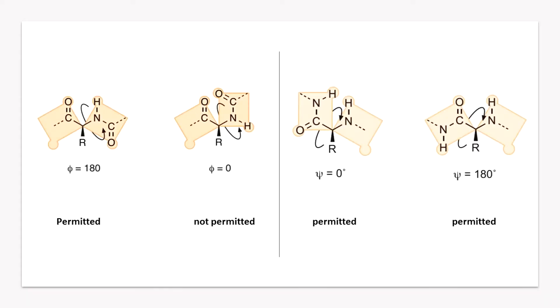So, which phi and psi combinations are sterically favorable and which are not? Let us find out. We have examined two extreme cases where phi and psi angles are between 0 and 180 degrees. For conformations where psi is between 0 and 180 degrees, there is no steric influence. For psi being 0, two small hydrogens of the two successive amide groups come closer. While for psi being 180, one amide group hydrogen faces the carboxyl group oxygen.